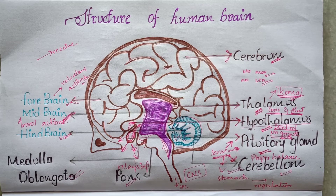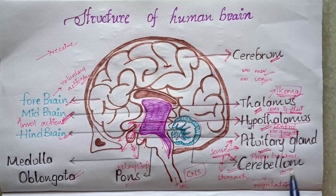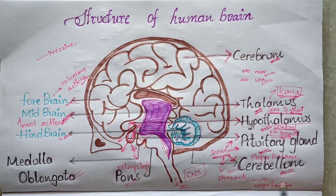The cerebellum also includes motor memory. For example, if we learn a skill for the first time, we have a little difficulty.